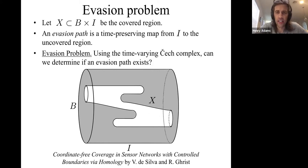Using this connectivity information, the time varying connectivity data or Čech complex, can we determine whether an evasion path exists or not? That's our challenge.